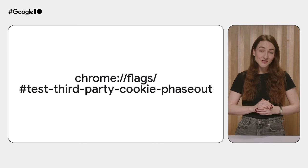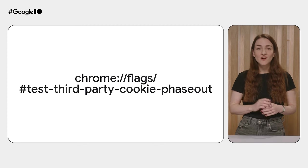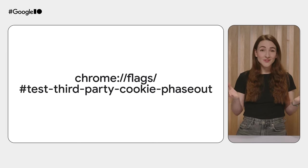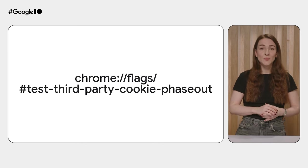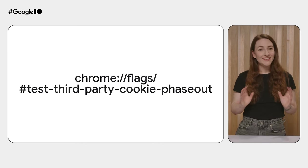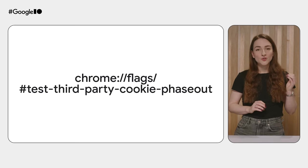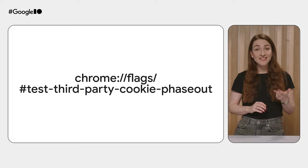Now is the time to test your identity-related user journeys for any breakage when third-party cookies are restricted. The best way to do that is to enable the test third-party cookie phaseout flag in Chrome 121 and higher. Then make sure to check for breakage of user registration, password recovery, sign-in, and sign-out. If you're using an open-source single sign-on solution or a third-party provider, check their documentation or reach out to them to see how upcoming changes affect their solution.